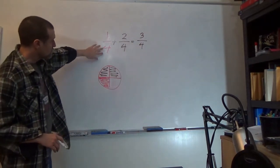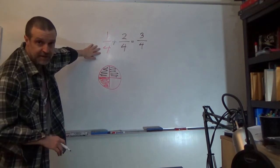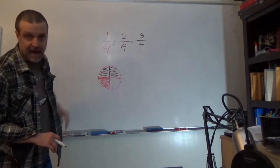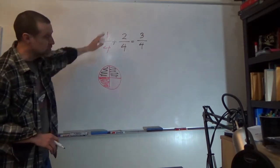So if you keep the number in the denominator constant, four, four, then you can just add the numerators together.